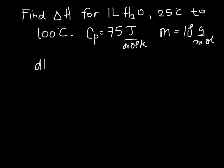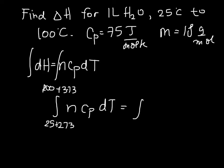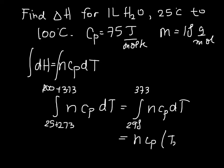We start with dH = n·Cp·dT and integrate both sides from (25+273) K to (100+273) K — we need to operate in Kelvin. Since n and Cp are constants, we bring them outside the integral, giving us the integral from 298 to 373 of n·Cp·dT, which evaluates to n·Cp·(T2 − T1).